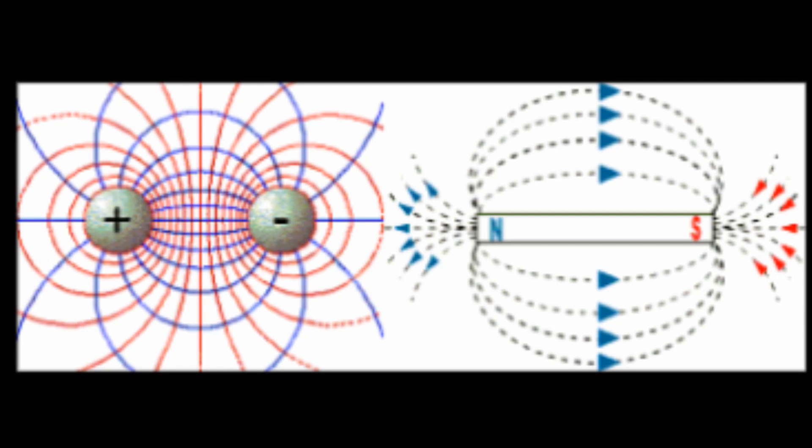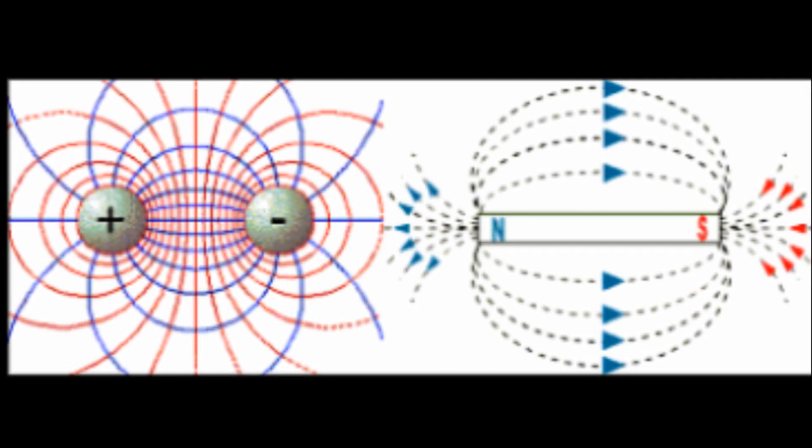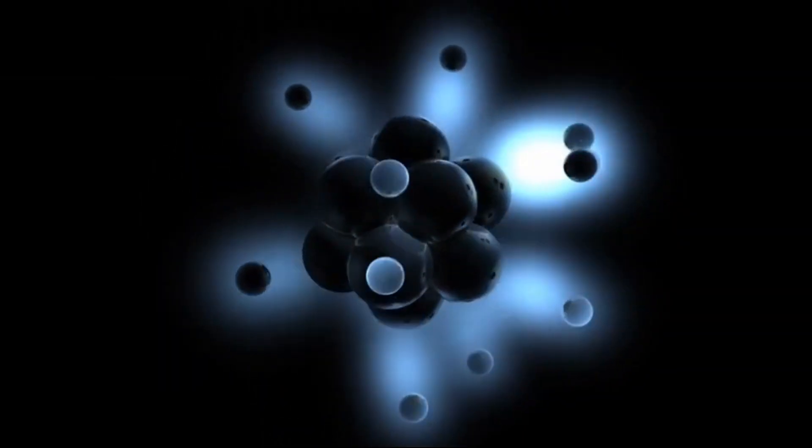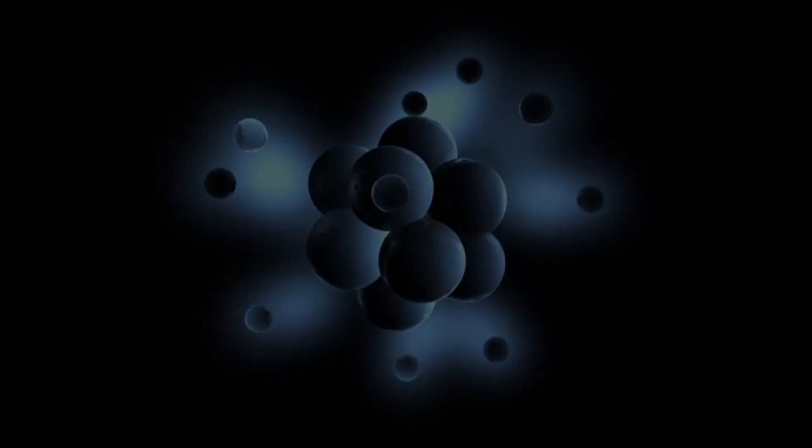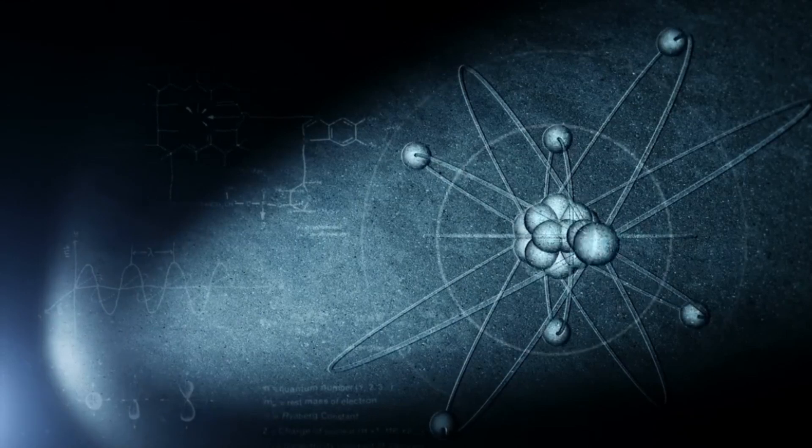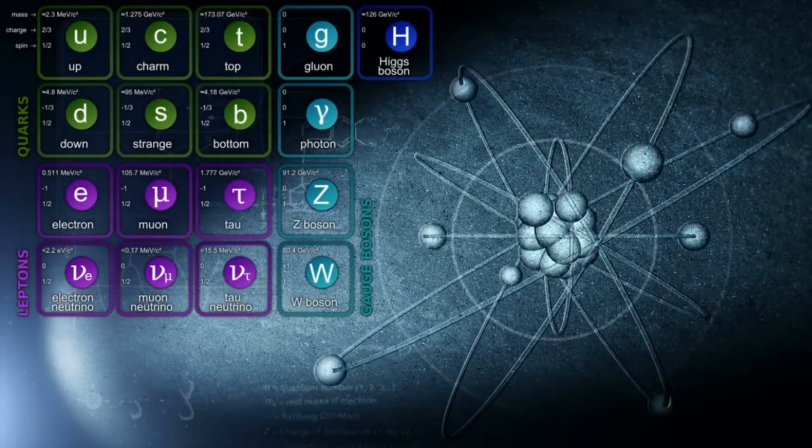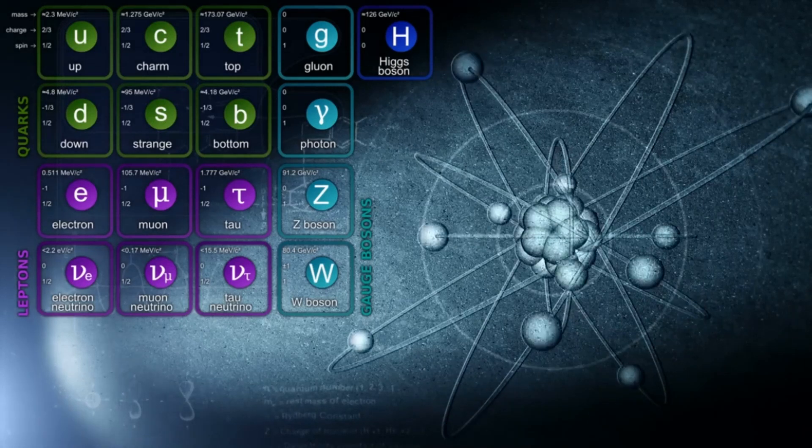Electric monopoles are the known elementary particles with electric charge. Every single atom on the periodic table and every particle in the standard model, as well as every matter that has been isolated thus far, possesses a magnetic monopole charge of zero.